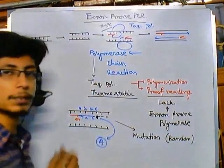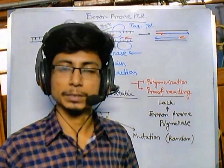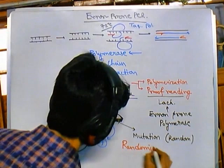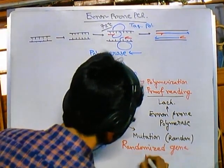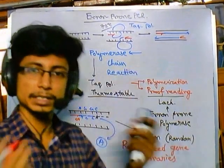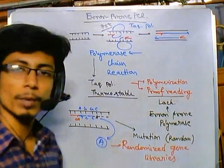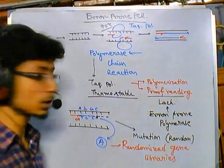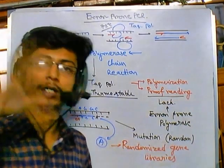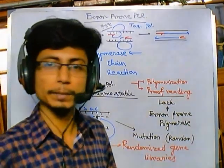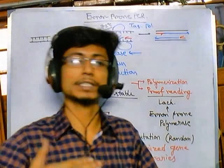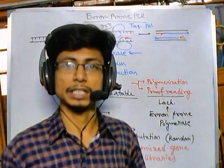In some cases we also need to produce randomized gene libraries. For the production of randomized gene libraries we can use error-prone polymerases. The major functions of error-prone polymerase are: first, to create random mutations or to perform mutagenesis experiments; and second, for randomized gene libraries so that we can clone them and increase the versatility of the gene libraries.